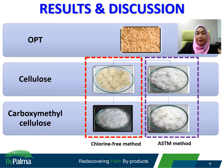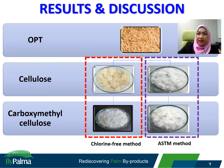This figure shows the physical appearance of extracted cellulose and CMC obtained from both extraction methods. The figure in the red circle shows CMC synthesized from OPT-derived cellulose extracted via the chlorine-free method; the cellulose has a yellow color, indicating traces of impurity still present. The figure in the blue circle shows cellulose extracted via the ASTM method and the CMC synthesized from it; the cellulose fibers were obtained in a white color with a cotton-like texture.